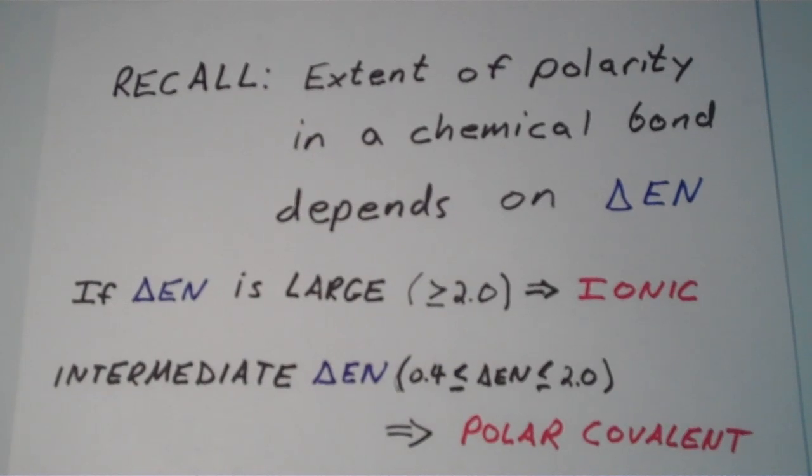If there is an intermediate electronegativity difference, and numerically that means if it falls between 0.4 and 2.0, we call that a polar covalent bond. This includes virtually all covalent bonds between two nonmetals that are of different elements.